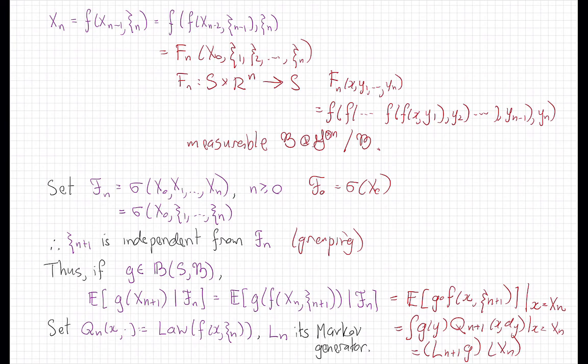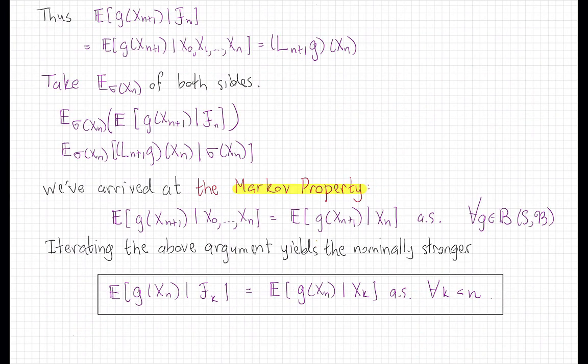So that's an even more concise way to describe the function that this conditional expectation is of X_n. Now, let's take this one step further. We've shown that for any bounded function g, g(X_{n+1}) conditioned on F_n, which means conditioned on all the previous random variables in the dynamical system, X0 through X_n.